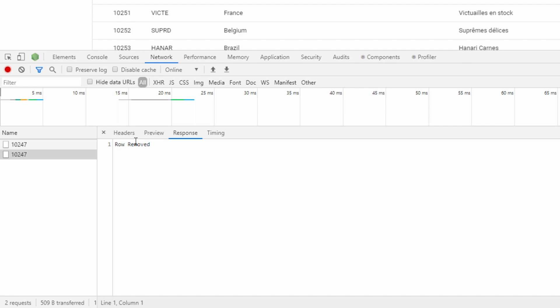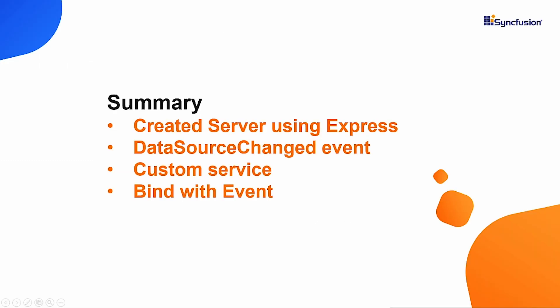Let me summarize the major points discussed in this video. First, we created the REST endpoints using the Express server. Then we saw the dataSourceChanged event of the grid component. We then created the custom service for API calls using the fetch API. Finally, we bound the custom service within the dataSourceChanged event for handling CRUD operations. Thanks for watching — if you found this video helpful, give it a like and subscribe to our channel.